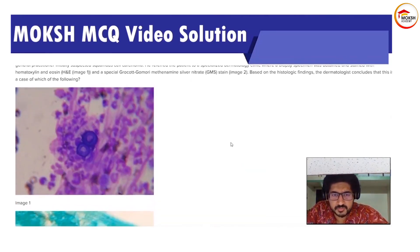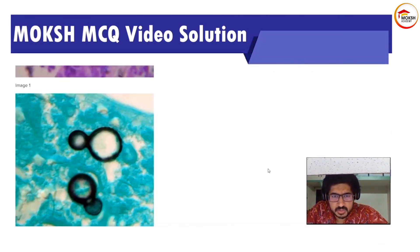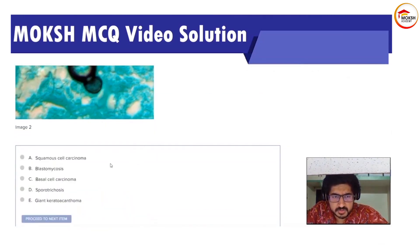Based on the histological findings, the dermatologist concluded that this is a case of which of the following? This is image one, this is image two. The options are: squamous cell carcinoma, blastomycosis, basal cell carcinoma, sporotrichosis, and giant keratoacanthoma.